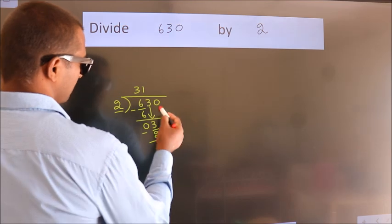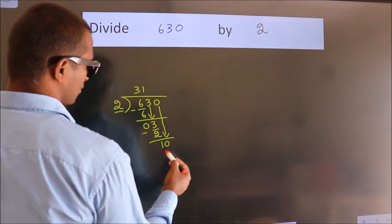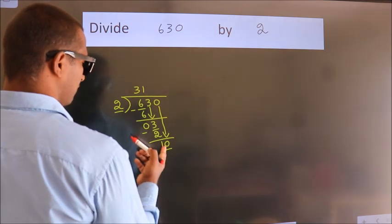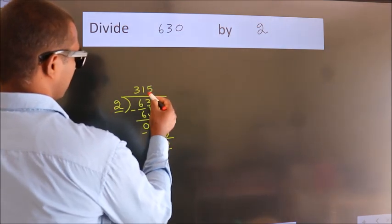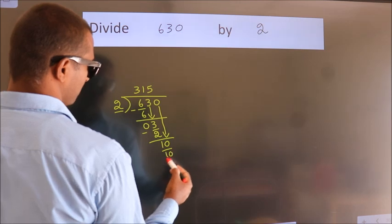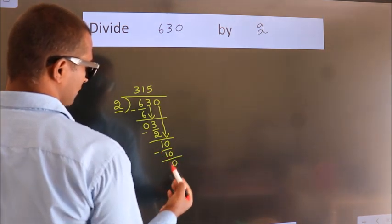After this, bring down the beside number. So 0 down. So 10. When do we get 10? In 2 table, 2 5s, 10. Now we subtract. We get 0.